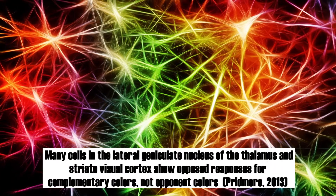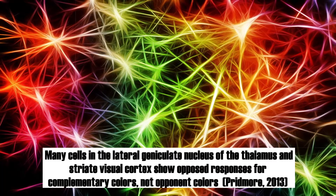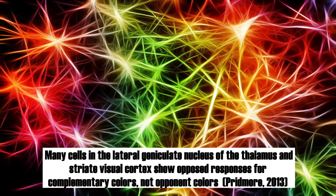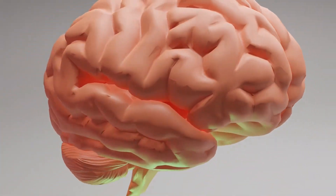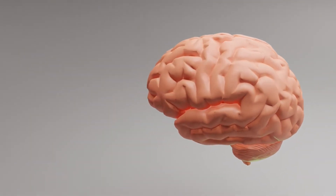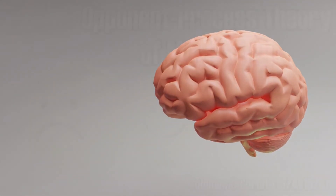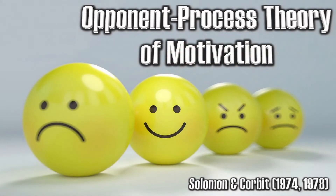Nevertheless, such give-and-take connections do not only exist in the visual cortex but can be found throughout the brain. As such, the opponent process theory has been extended to other functions. Most well-known is Richard Solomon's opponent process theory of emotion and motivation.